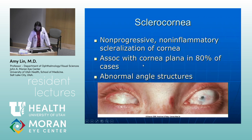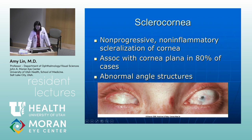Sclerocornea is a non-progressive, non-inflammatory scleralization of the cornea. It's congenital, associated with cornea plana in 80% of cases, and there's basically no clear cornea or very little clear cornea and very abnormal angle structures.